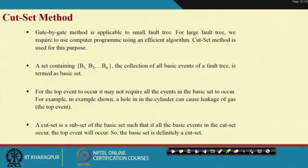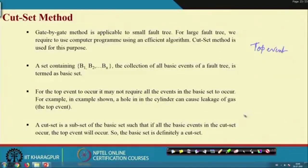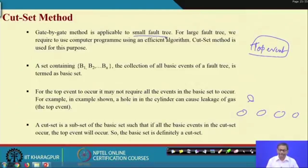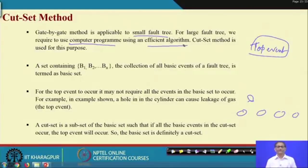You have already seen the gate-by-gate method. In the gate-by-gate method, the top event with different gates — finally at the bottom events, the bottom event probabilities are known, every gate is quantified, and finally the top event probability is quantified. That method is good for small fault trees. For large fault trees, you require computer programming and an efficient algorithm for that purpose. The cut set method is one such algorithm that will help in quantifying the top event probability through computer programming.